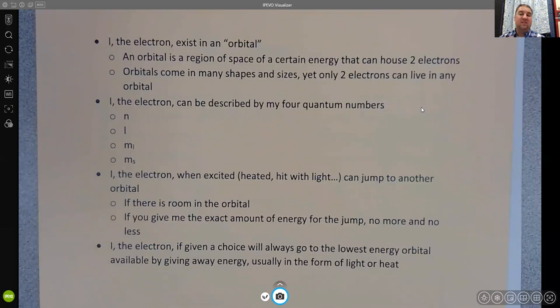And so if I was speaking as an electron, I might tell you about myself that I, the electron, exist in an orbital and that an orbital is a region of space of a certain energy that can house two electrons. And so as we saw with say oxygen, those orbitals can only hold two electrons, but there might be more than one orbital in a given shell and there might even be more than one orbital of a particular type from one of the blocks on the periodic table.